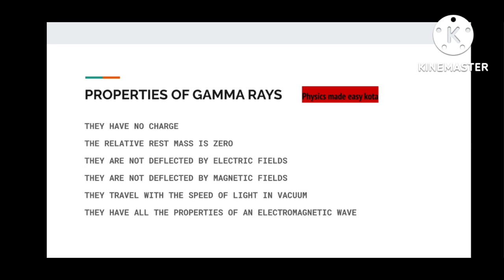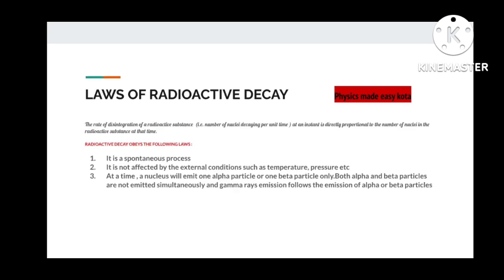The rays which are not deflected are uncharged and they are known as gamma rays or high-energy photons. Some properties: first, they have no charge and their relative rest mass is zero. They are not deflected by electric and magnetic field because they consist of no charge. They travel with the speed of light in vacuum. They have all the properties of an electromagnetic wave.